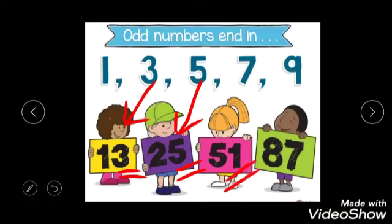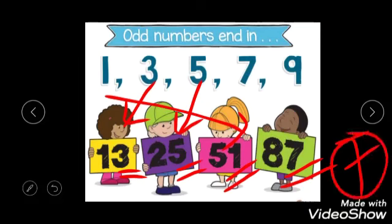Now 51. Does 1 come in the 2's table? No. So 51 is an odd number. Now 87. Does this 7 in 87 come in the 2's table? No. So 87 is also an even number. Sorry, odd number. 87 is also an odd number.